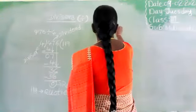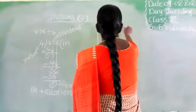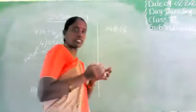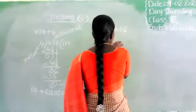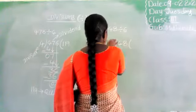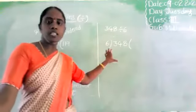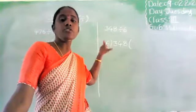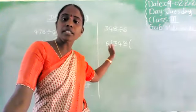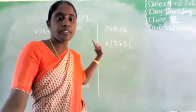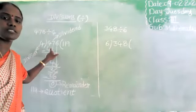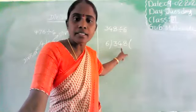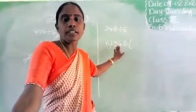348 divided by 6. Here 348 is the dividend and 6 is the divisor. First compare: 6 is greater than 3, and 3 is smaller than 6. So we have to take a 2-digit number, which is 34. 34 divided by 6: in the 6 table, 6 fives are 30 and 6 sixes are 36. The nearest and smallest number to 34 is 30.